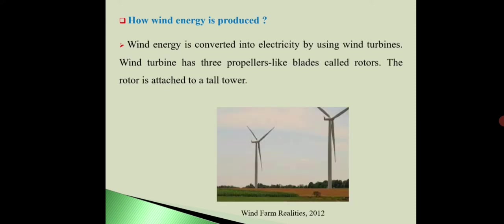Now how is this wind energy produced? Wind energy is converted into electricity by using wind turbines. See in this diagram, wind turbines have three propeller-like blades called rotors. The rotor is attached to a tall tower. Here in this image we can see the three blades and the tall tower.